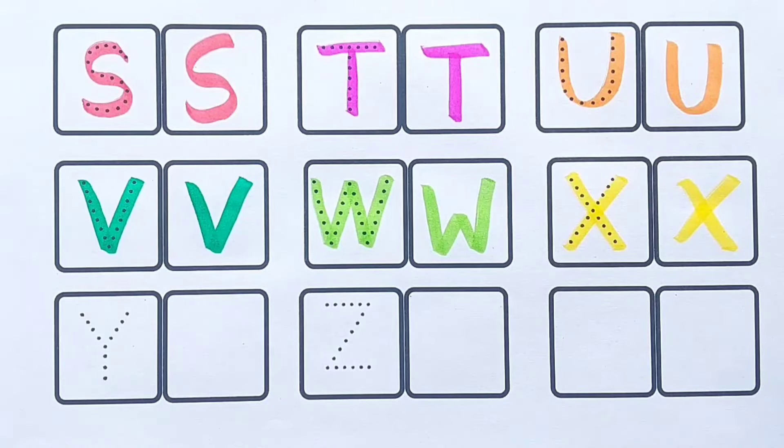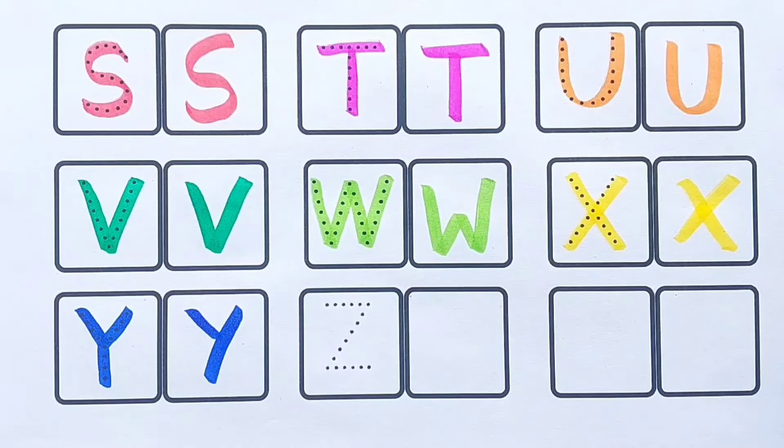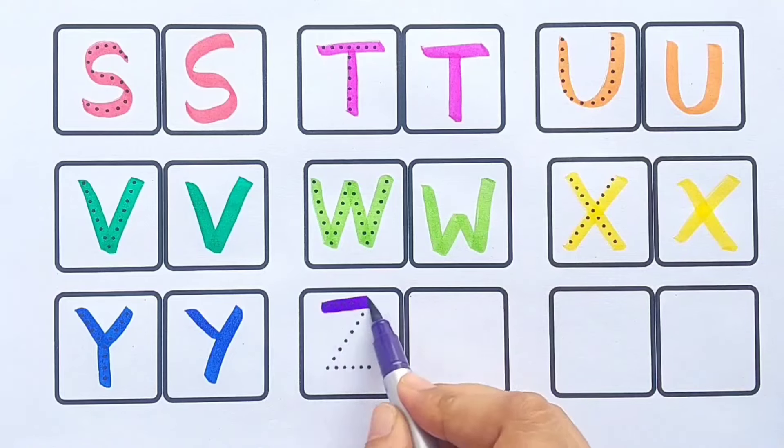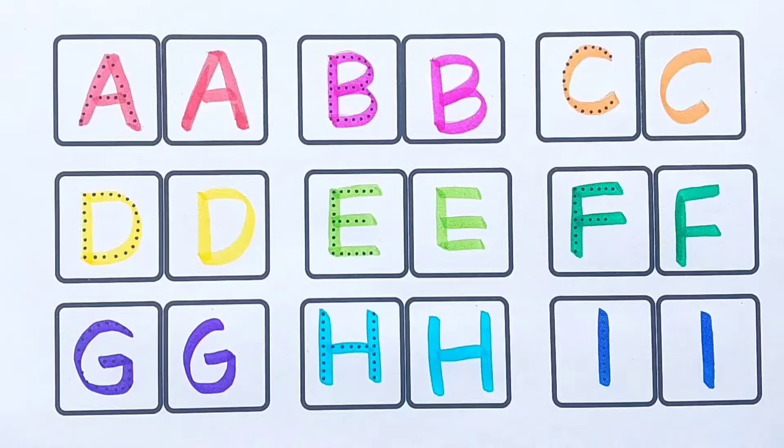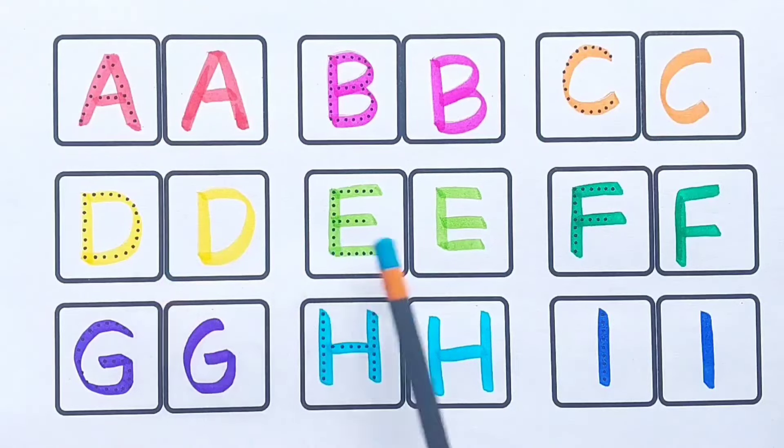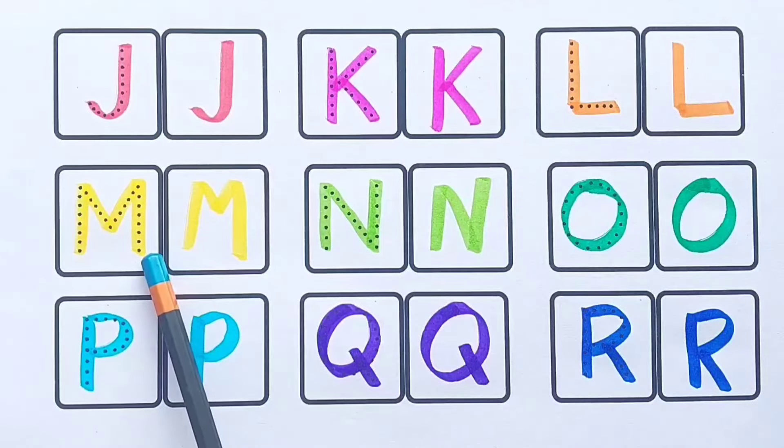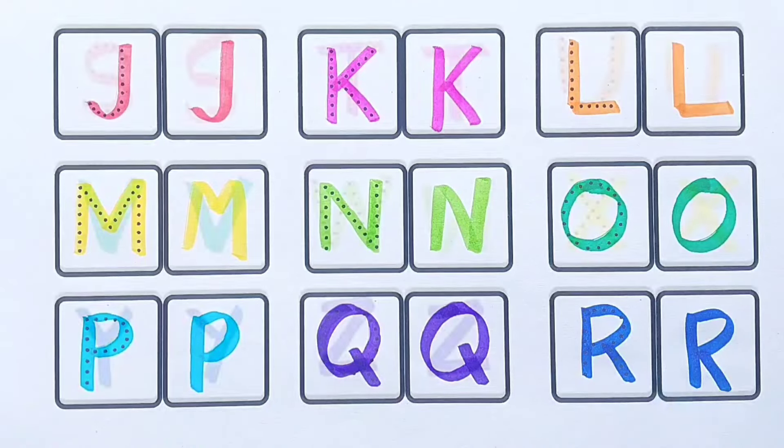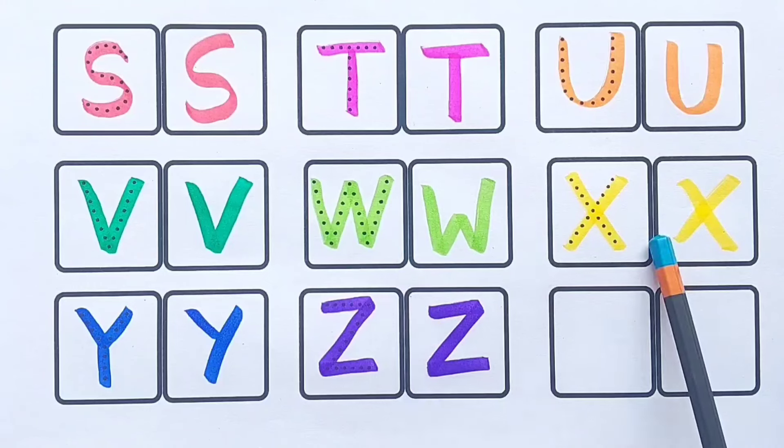Y Y for yo-yo, purple color. Z Z for zebra. Let's revise: A B C D E F G H I J K L M N O P Q R S T U V W X Y Z.